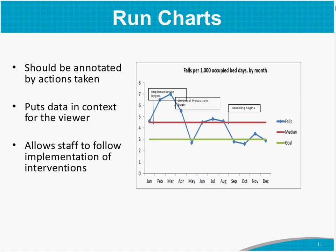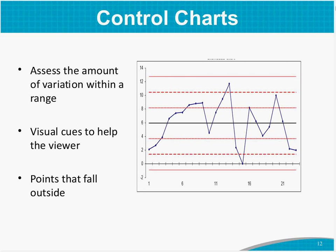A control chart is a special type of run chart. Control charts have control limits that are created based on the data in the plot — these are based in probability and take into account the variability of the data. They provide visual cues to help you interpret the data based on those control limits. The control limits are parallel lines on the graph that help you understand the significance of variations in your data.